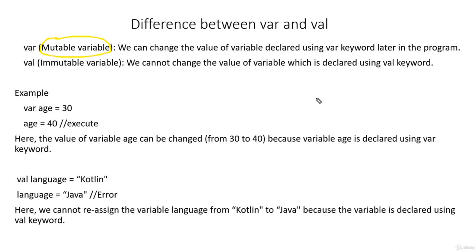Whenever we create a variable using a var keyword, that variable's value can be changed at a later stage. So let's say first we create a variable h with a value of 0, and later we want to reassign a value of 20 to that h variable — we can do that. It is possible because var is a mutable variable.